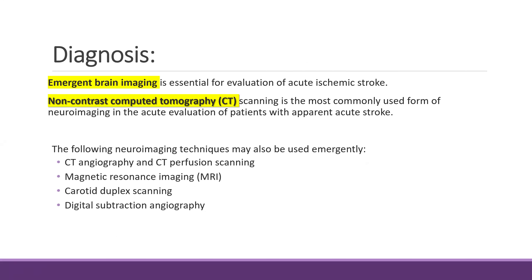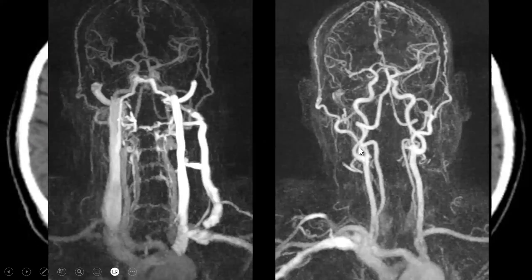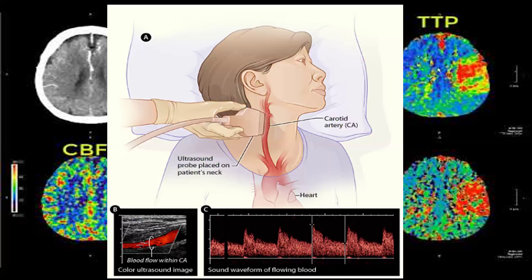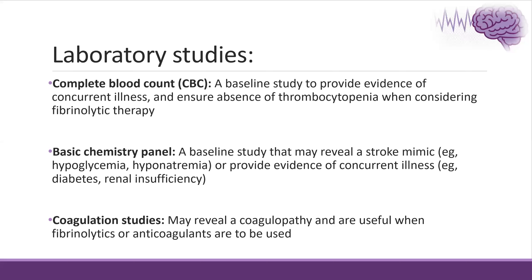We need emergent brain imaging, which is non-contrast CT scan — the most commonly used neuroimaging for evaluating the patient — and its importance is to exclude underlying hemorrhagic stroke. We can also do CT cerebral angiography for the arterial supply of the brain, and CT perfusion, which can help differentiate core and penumbra and assist in thrombectomy decisions or for patients who present with wake-up stroke. Later, not in the acute phase, we can do carotid Doppler ultrasound, and finally conventional angiography if needed for specific patients.